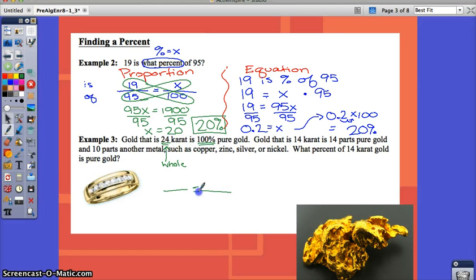So, this is kind of tricky because they don't really have the is and the of in there, but we know that we want to find the percent because it says what percent. So, put that over 100. What percent of 14 carat gold is pure gold? Well, how much pure gold is in 14 carat gold? Find that in the problem. 14 carat gold is 14 parts pure gold. That means your part is 14. And if it was all gold, there would be 24 carats. So, it's going to be over 24.